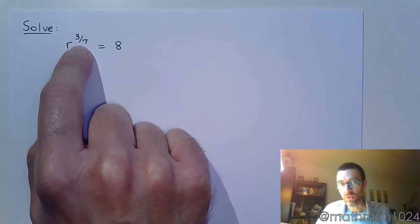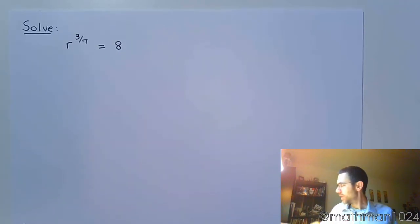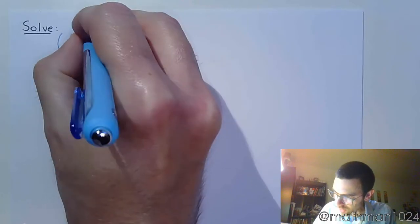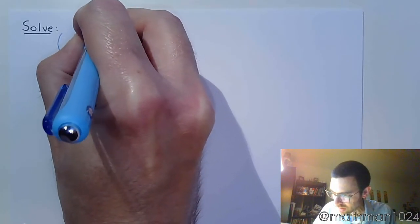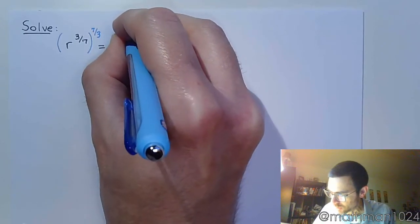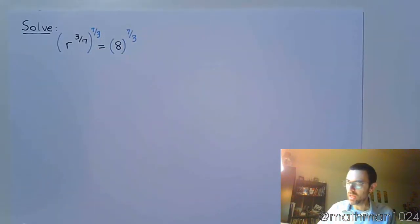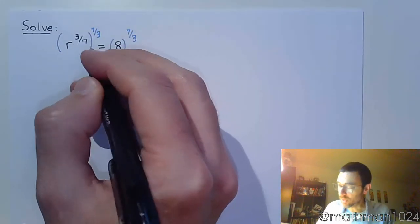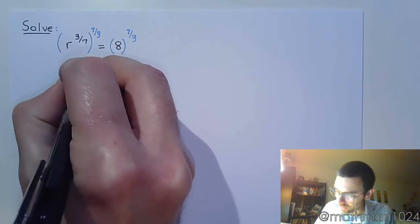When we have a power, the way we undo it is to raise both sides of the equation to the reciprocal power. So I'm going to raise both sides here to the seven-thirds power. When I do a power to a power, I multiply them, but since these guys are reciprocals, this is just going to give me r to the first.